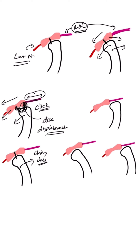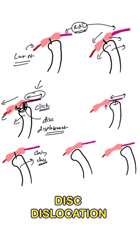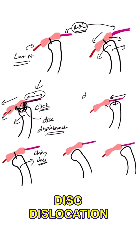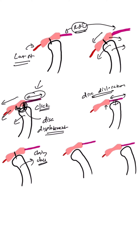Let's say this retrodiscal lamina, which has lost its elasticity, becomes even more loose. When it becomes more loose, the condyle will rest directly on the retrodiscal lamina with no contact on the posterior part of the articular disc as well. This condition is known as disc dislocation. Remember, this is different from disc displacement.